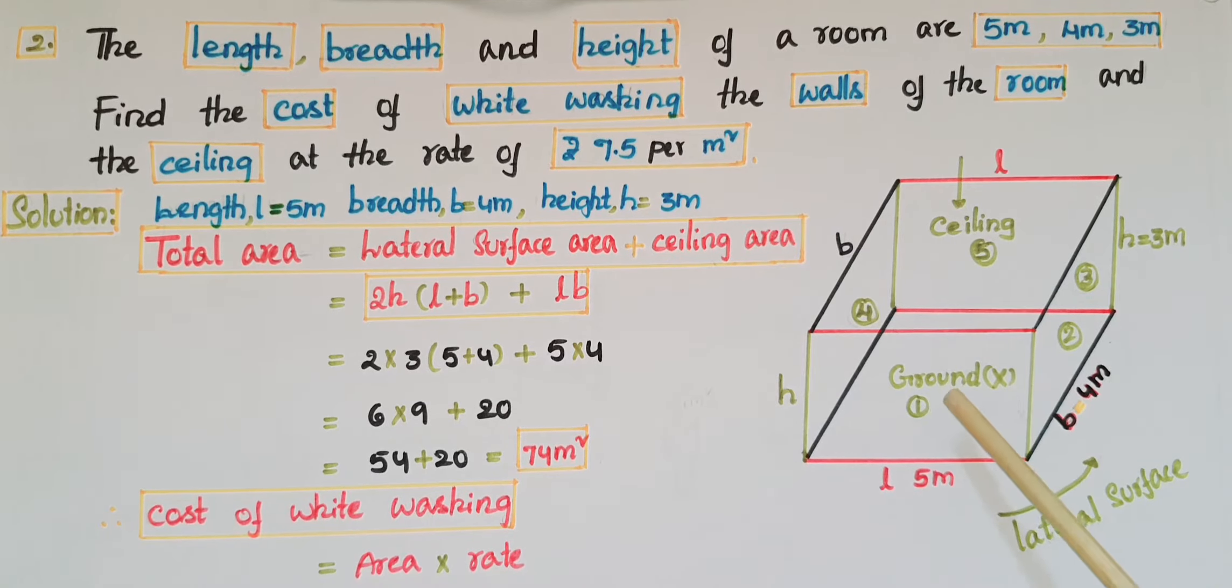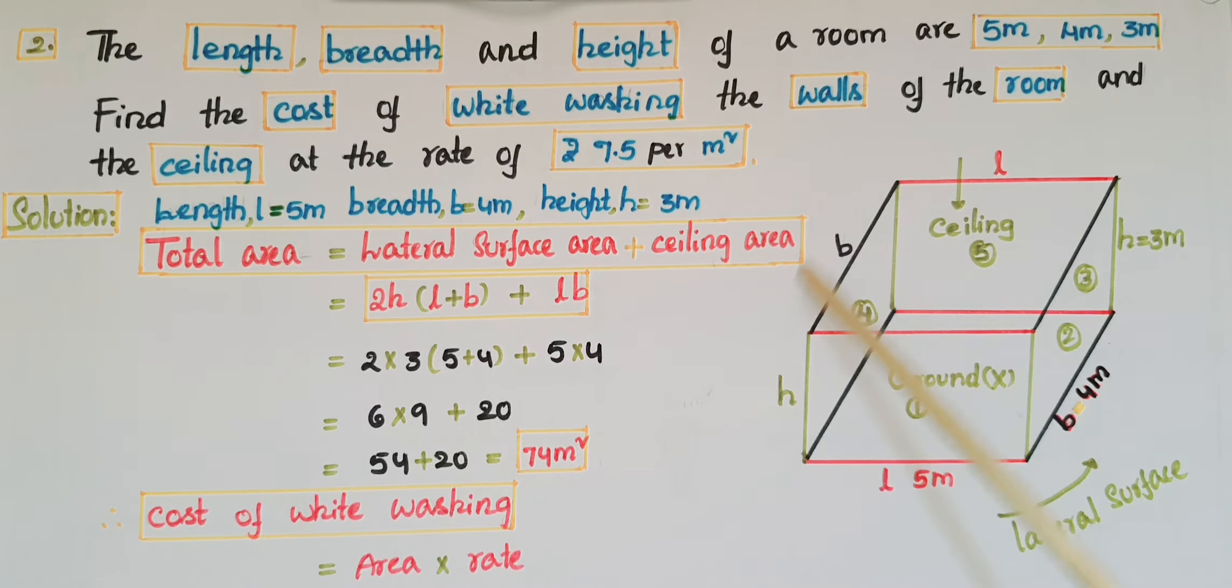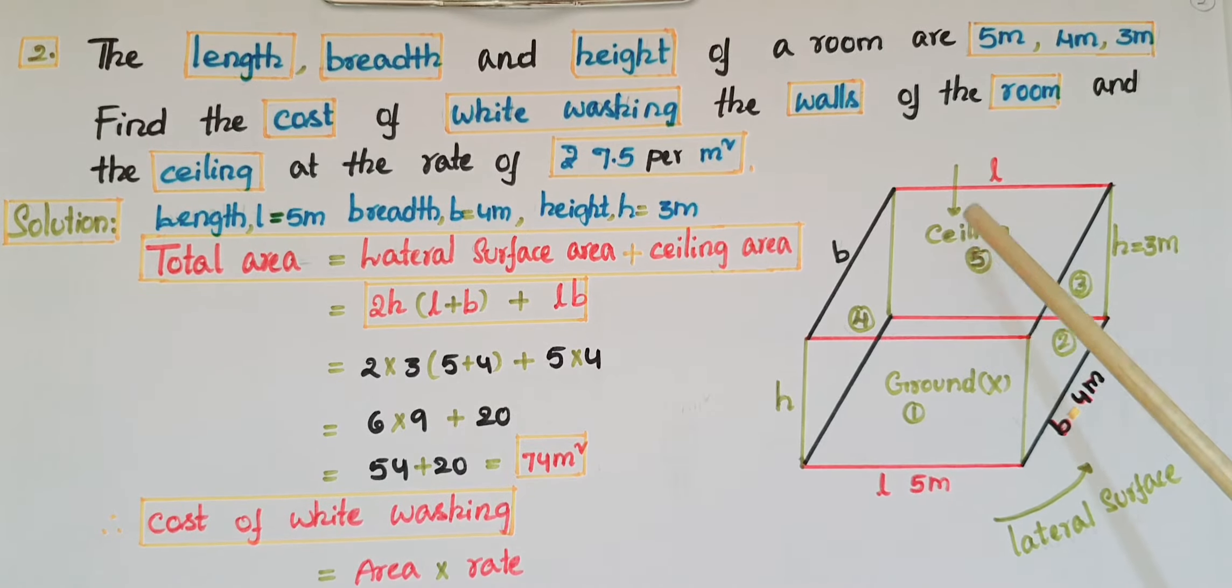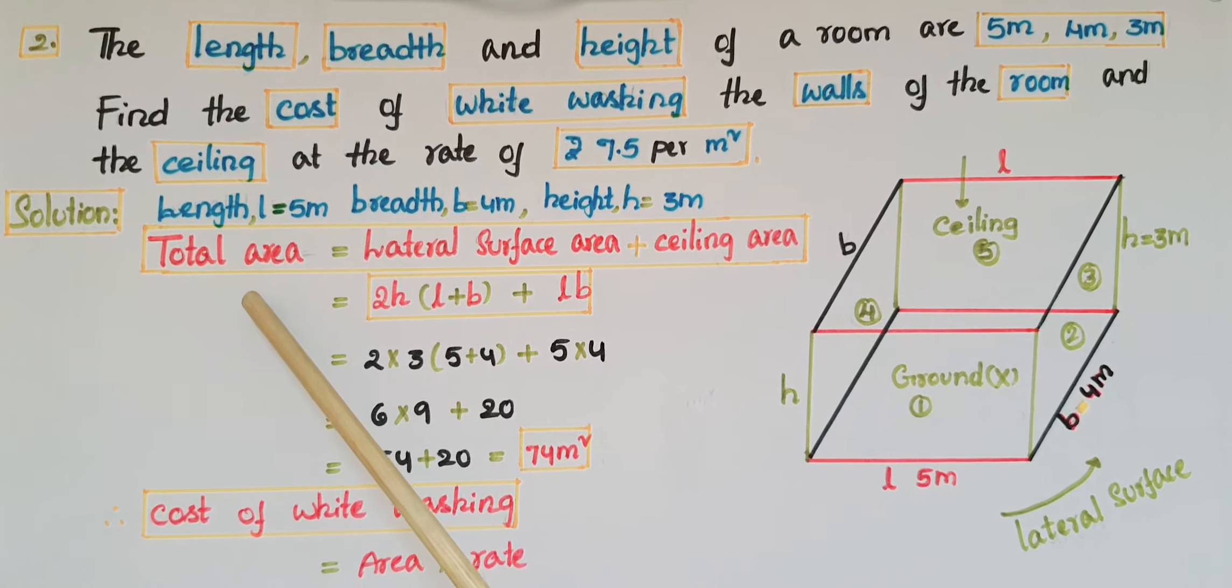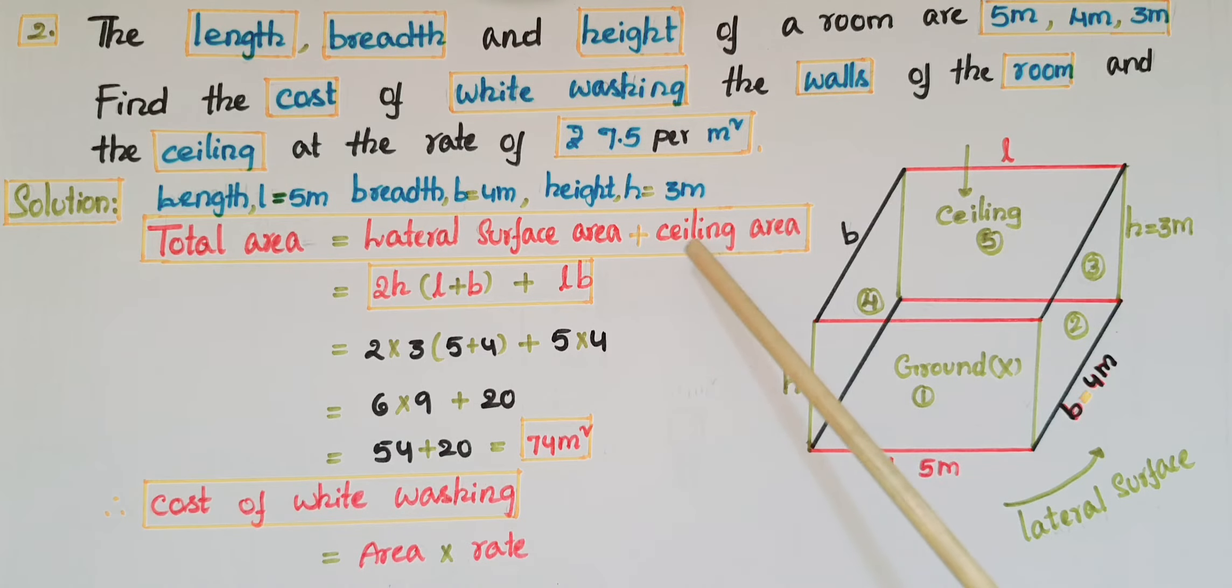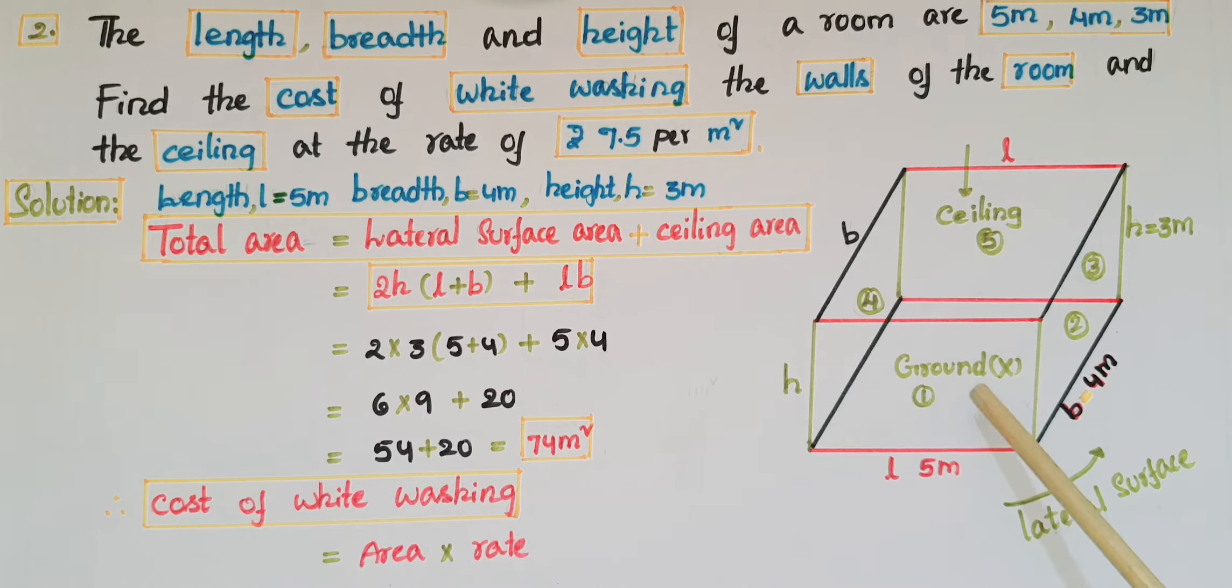We have to find the cost of whitewashing the four walls including the ceiling area, excluding the ground floor area. Total area equals lateral surface area plus ceiling area. This is a cuboid, so lateral surface area is 2h(l+b), plus ceiling area which is l×b.